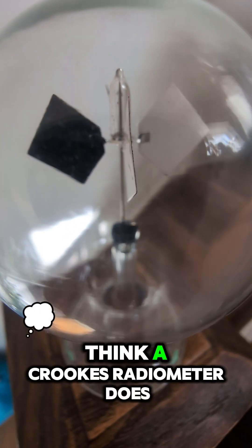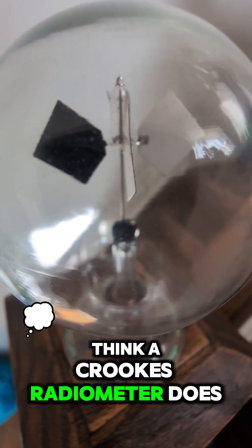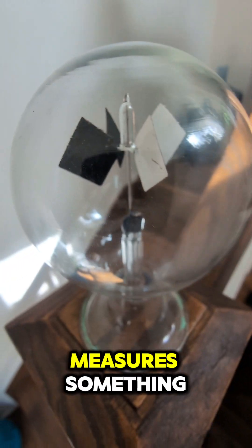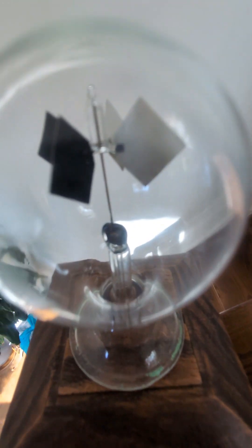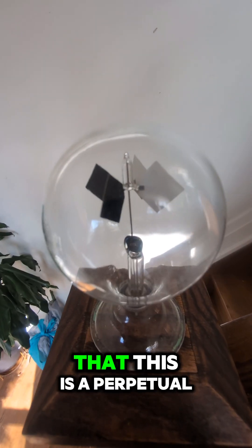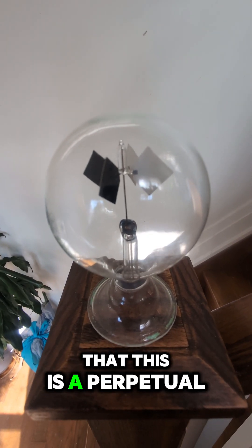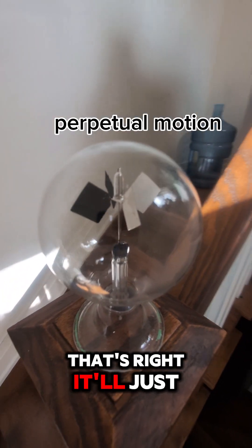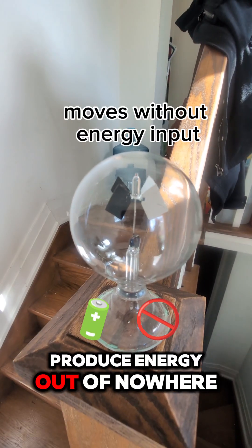Now what do you think a Crookes radiometer does? I'm going to give you a hint. The word meter means it measures something. But I'm going to present to you an alternate thesis that this is a perpetual motion device. That's right.